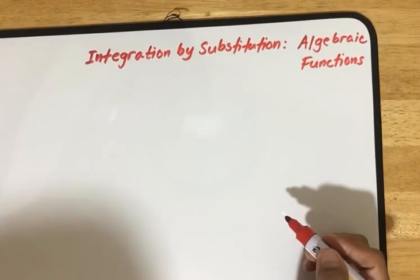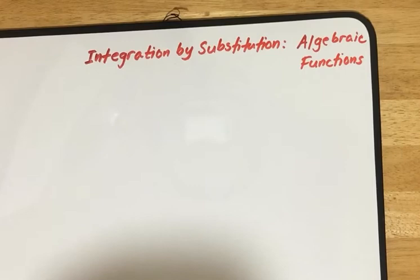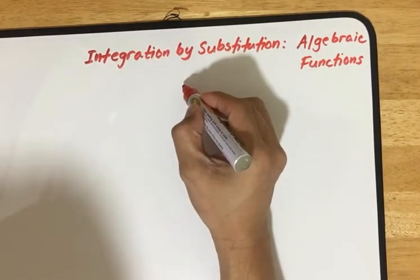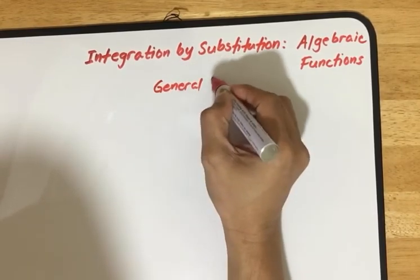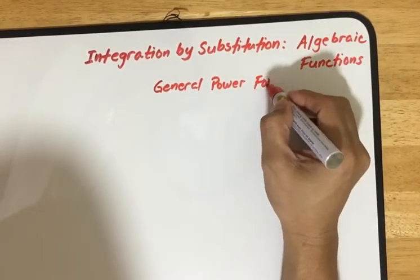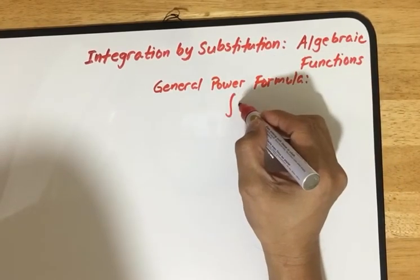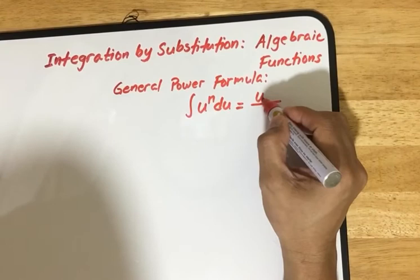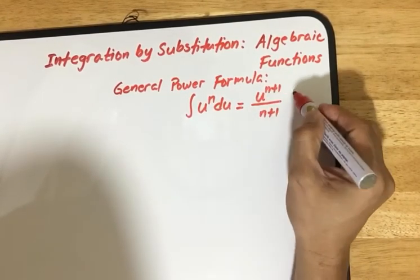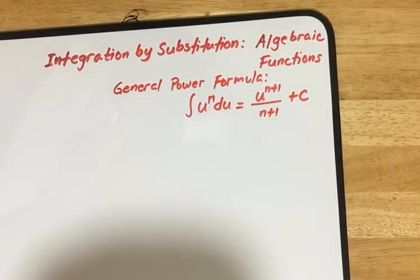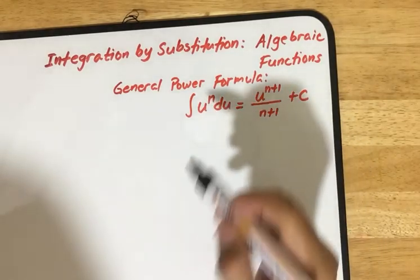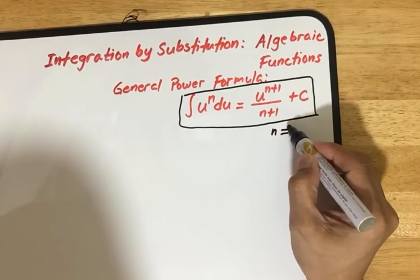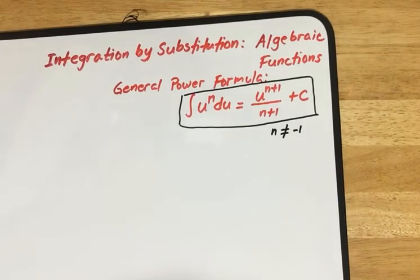In our previous video we solved one example for this topic, and as mentioned we will use the general power formula. The general power formula is: the integral of u to the n du equals u to the n plus 1, divided by n plus 1, plus C. Note that in this formula, n must not be equal to minus 1.